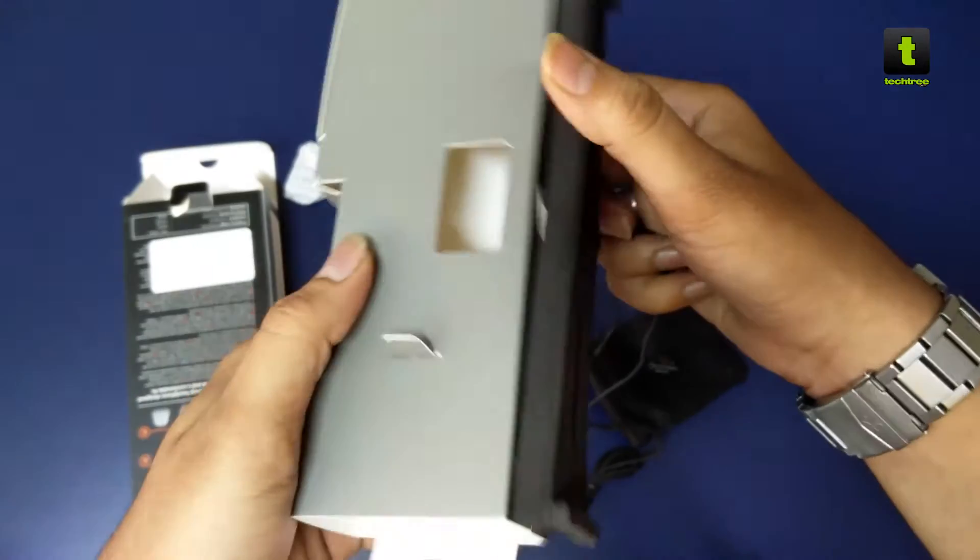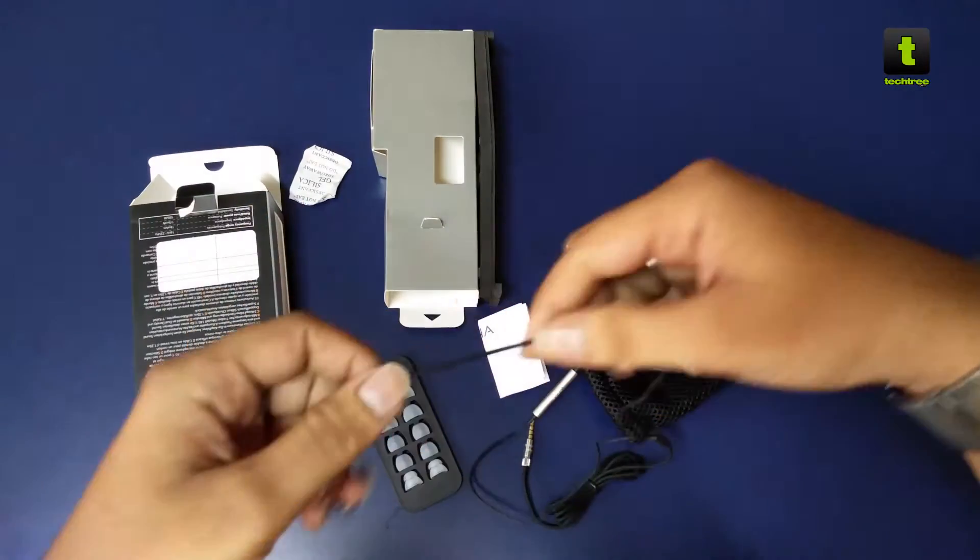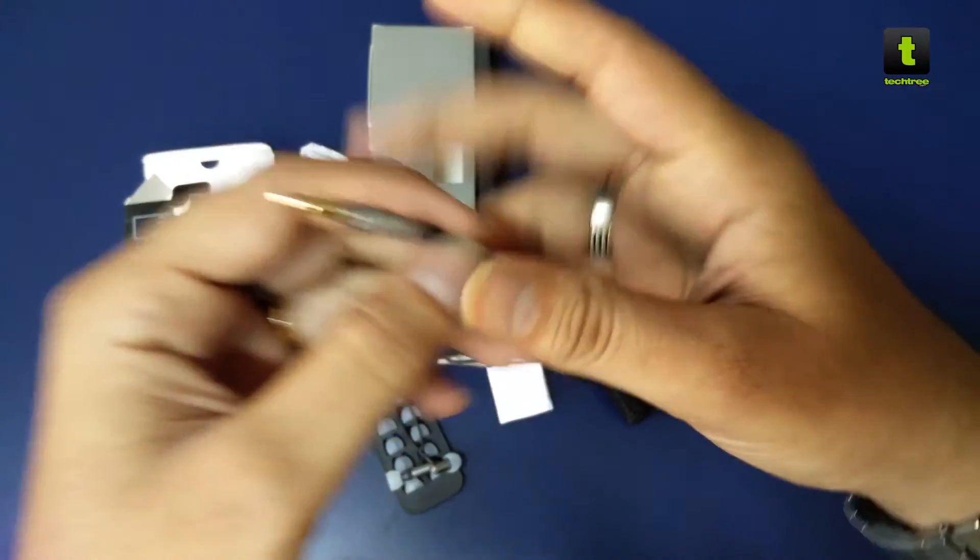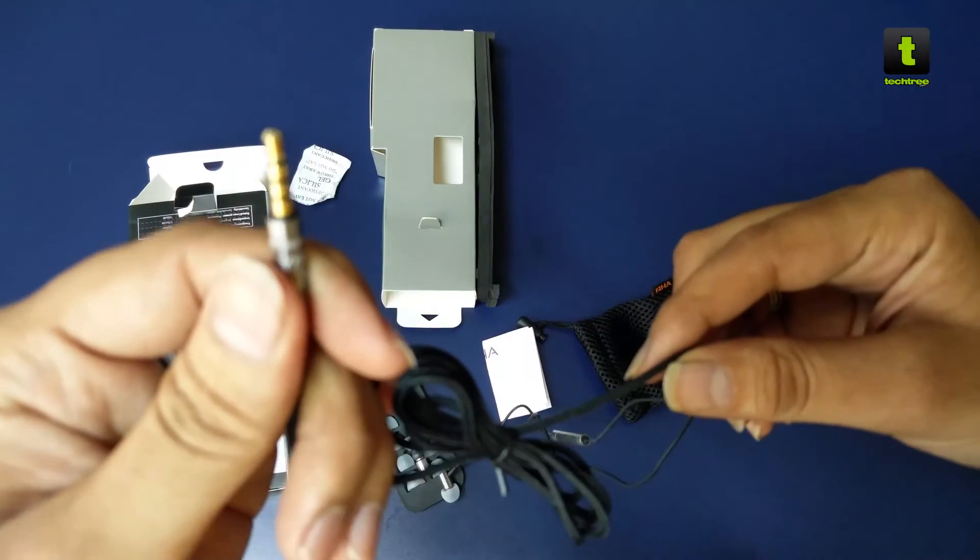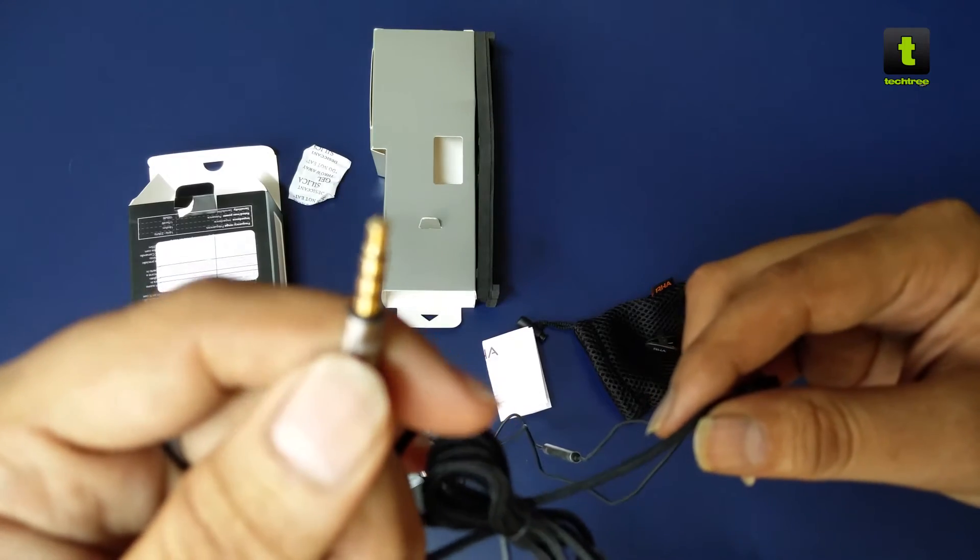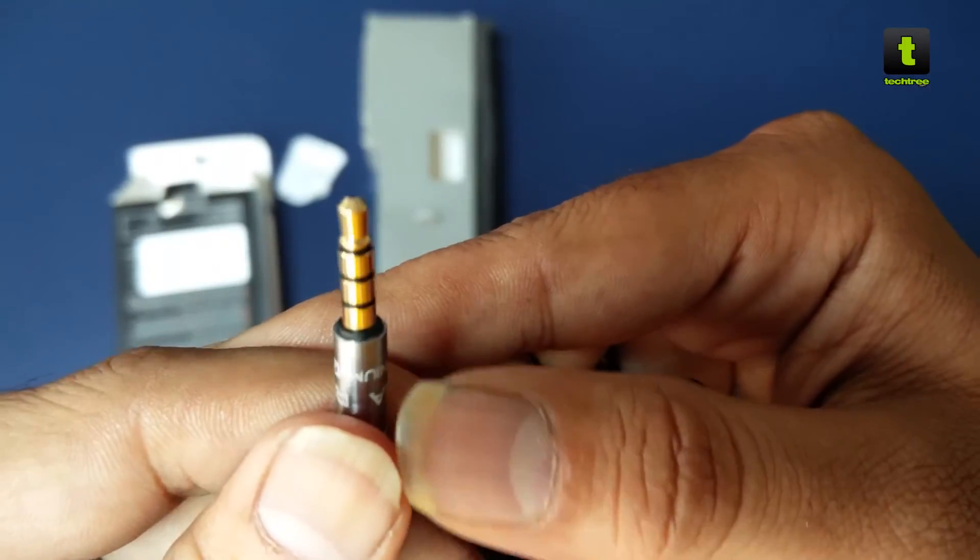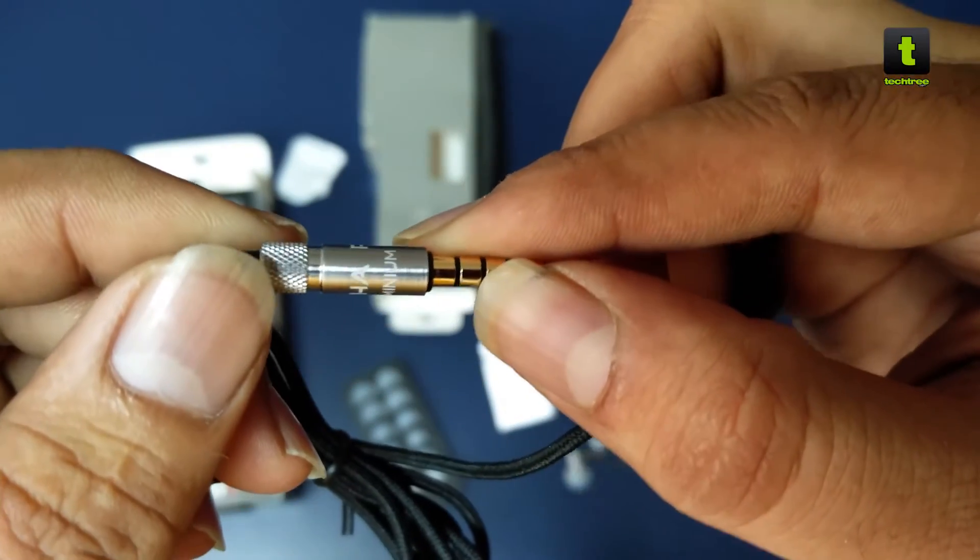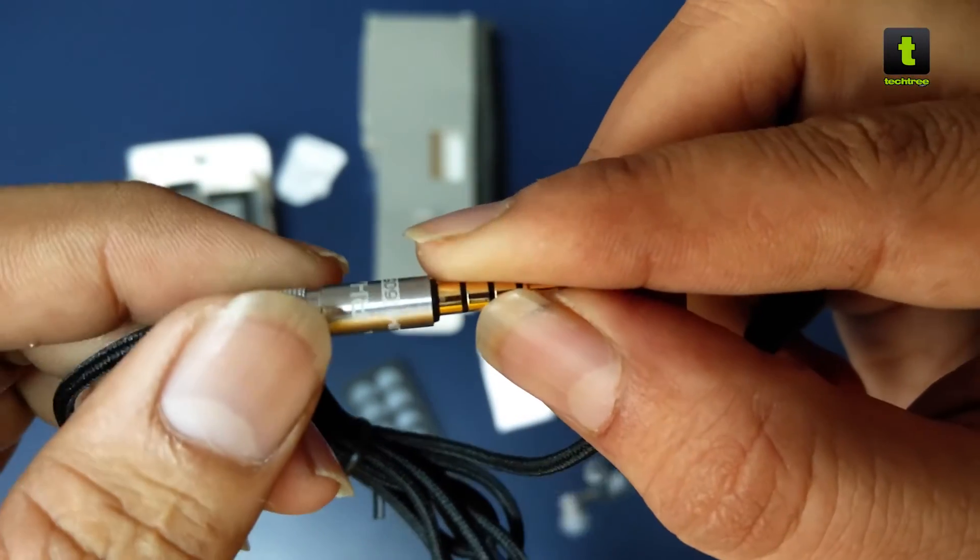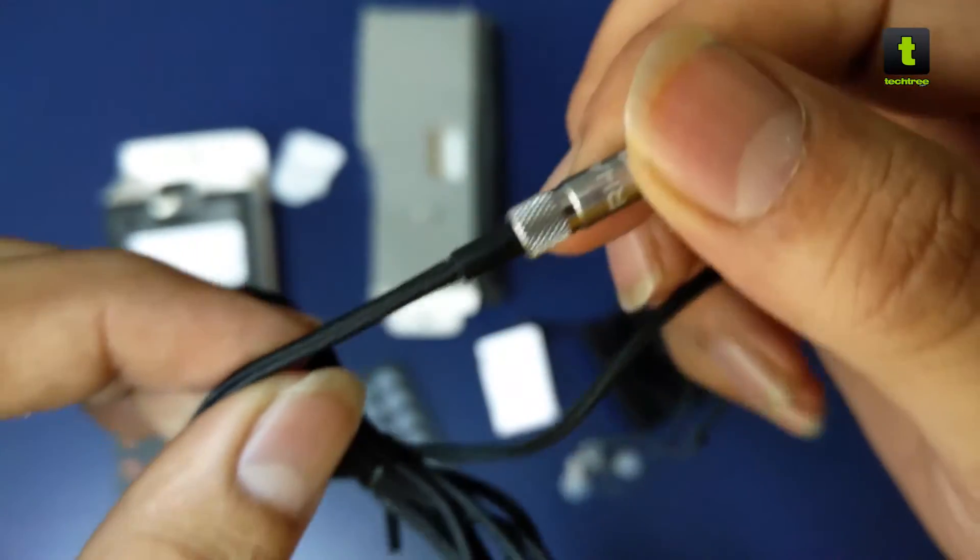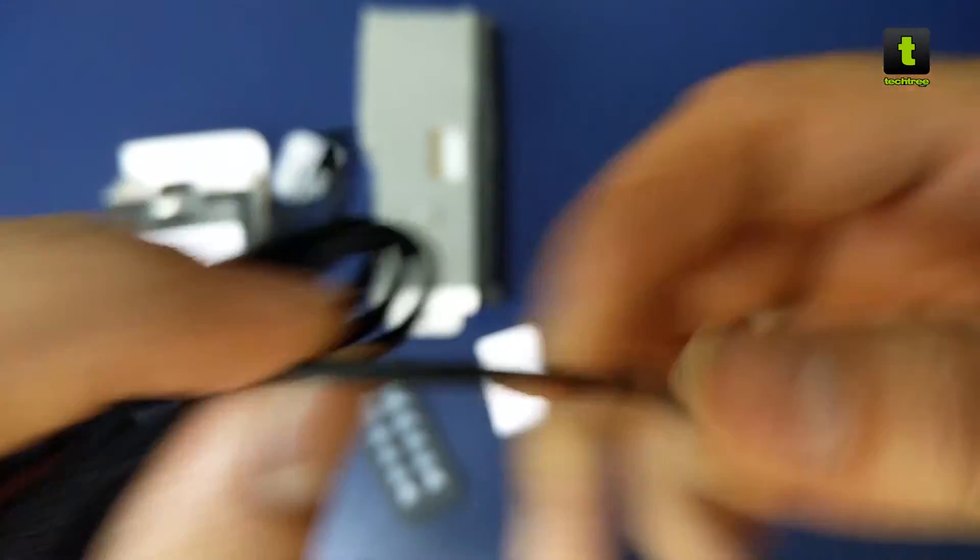So this is the earphone, the actual RHA S500i earphone. It comes with a gold metal pin, gold metal coated pin. Just the brushed aluminum design, very brilliant, neat.